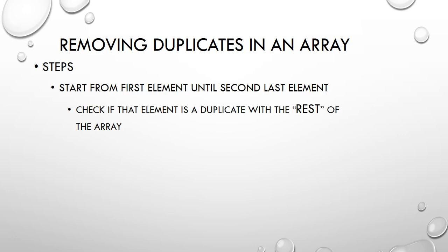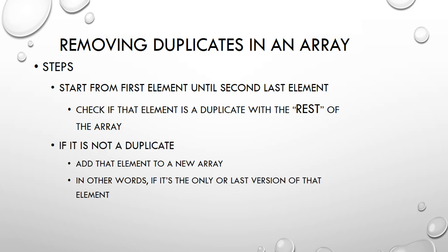The first step is we're going to have a loop that starts from the first element in our array to the second last element. We're going to check each and every element using this first loop, comparing that first element with every other value in the rest of the array that occurs after it. If we find no duplicates of that first element, then we are going to add that element to a brand new array - you can call it 'array without duplicates' - basically creating a brand new array so we do not lose the original data.